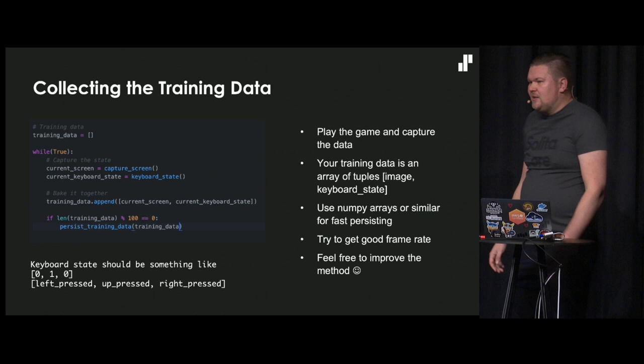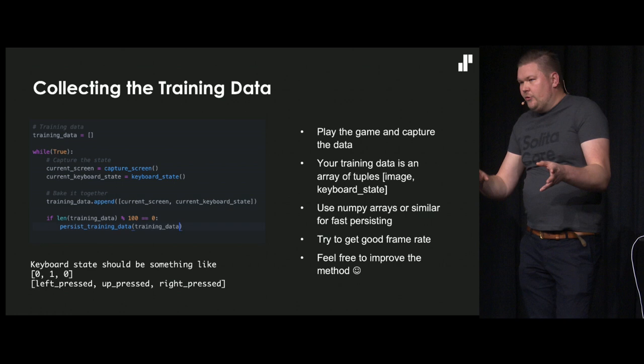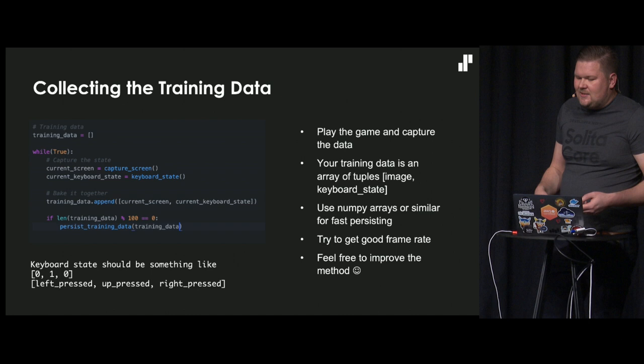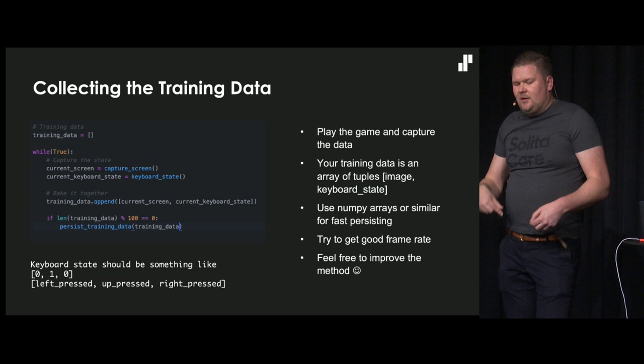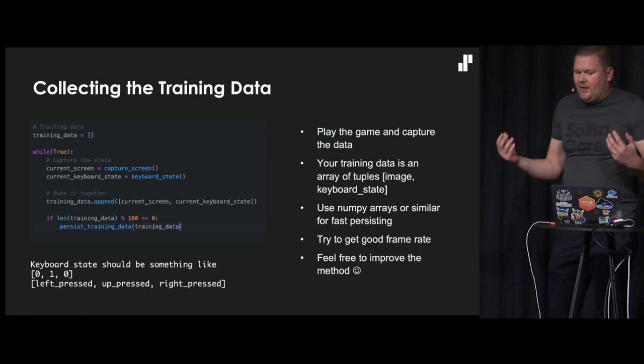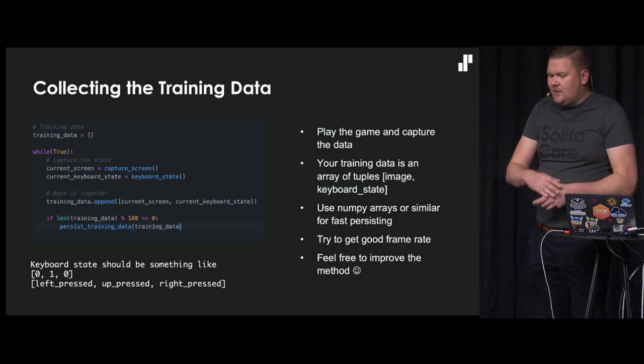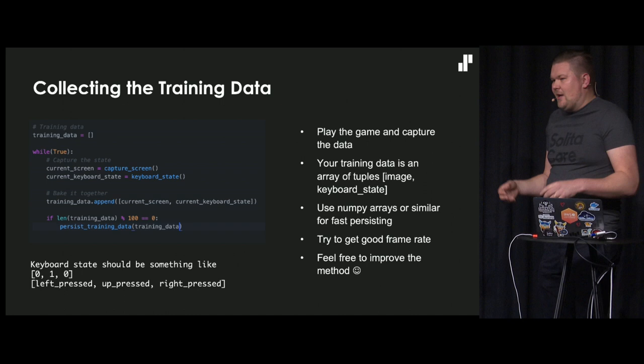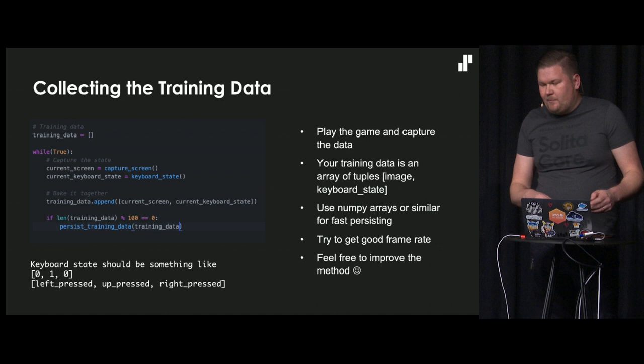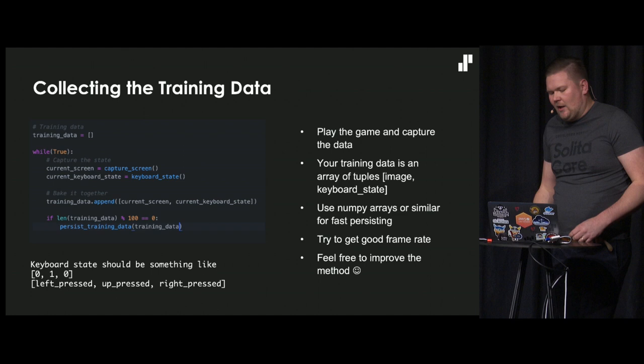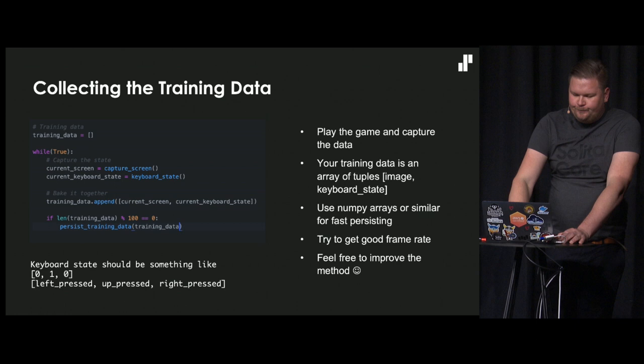How does it look when you collect the data? This is pseudocode, but the rough idea is that you loop all the time, capture the screen, get the current keyboard state, and bake them together - you have an array of tuples where the first is the current screen and the second is the current keyboard state. Every hundred frames you just persist the data. You fire this up and play the game for a long time, and then you have training data.